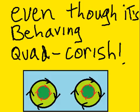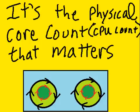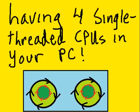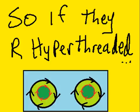Even though it's behaving quad core-ish, theoretically it's the physical core count, the CPU count, that matters. But dual core hyper-threading is like having four single-threaded CPUs in your PC, theoretically. So if your CPUs are hyper-threaded, then multiply each core by two, and that's the equivalent of how many single-threaded CPUs you have.